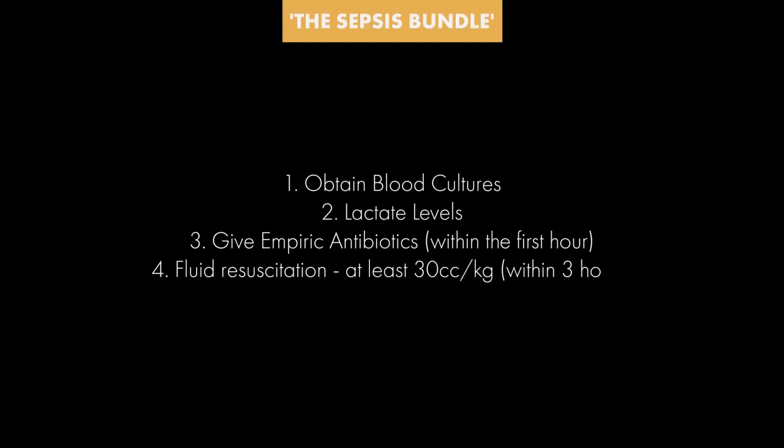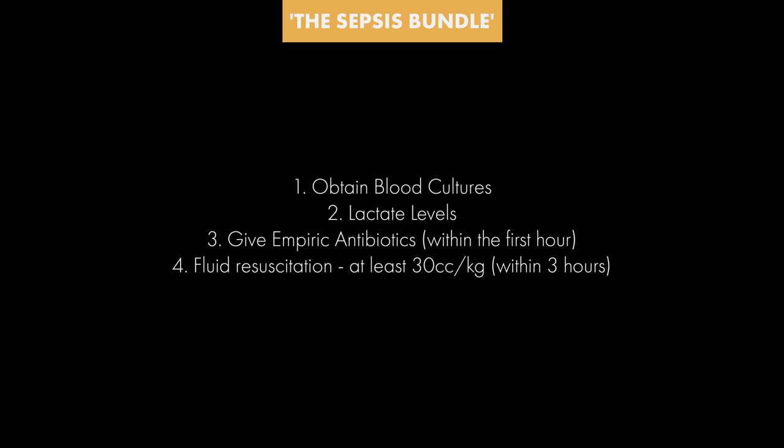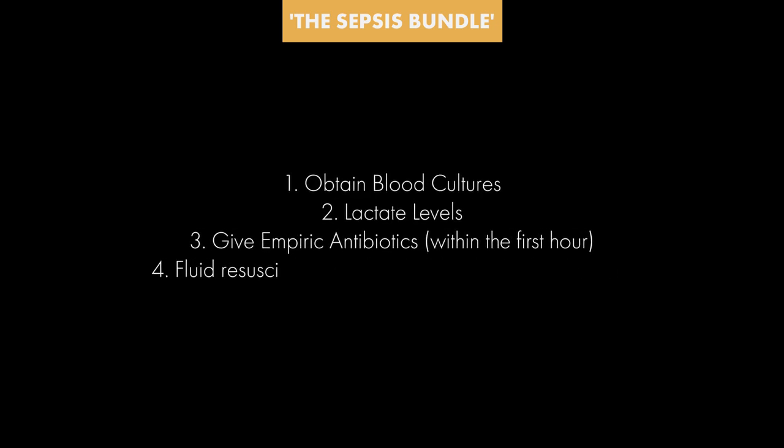Once you've gotten your labs, think about what we call the bundle — some call it a three-hour bundle, but I prefer to see it as a one-hour bundle so things get done faster. That bundle basically contains: getting your blood cultures, getting your lactate, giving the patient broad-spectrum antibiotics, and giving them fluids. The fluid recommendation is 30 cc per kg over about three hours. I like to think about doing all of these at the same time.